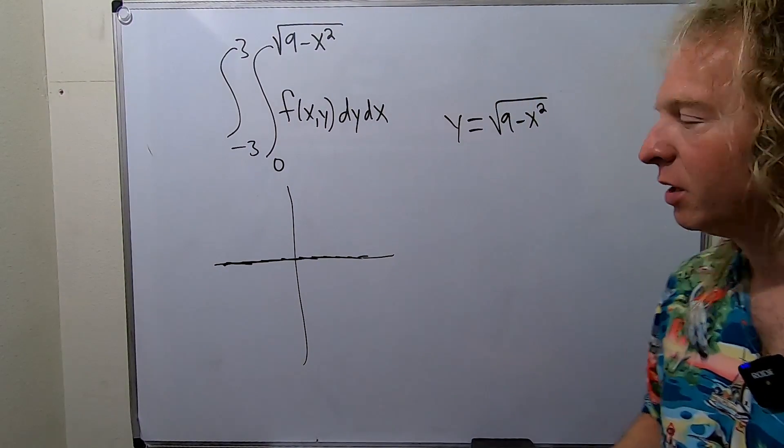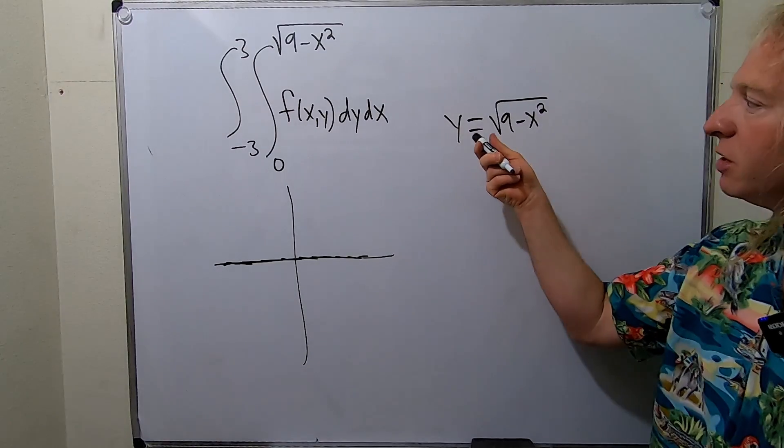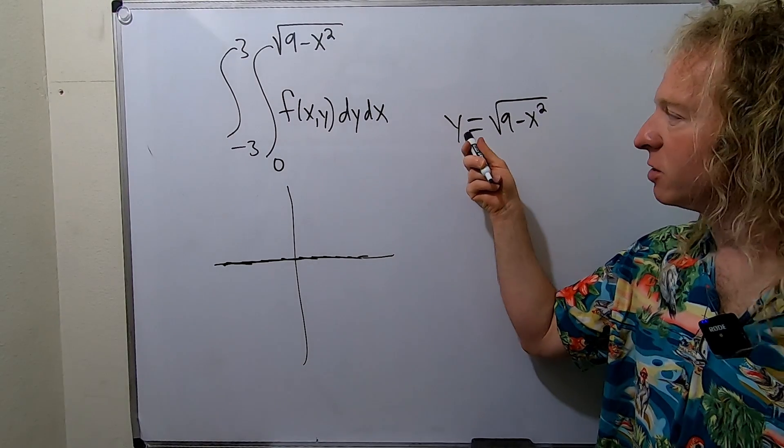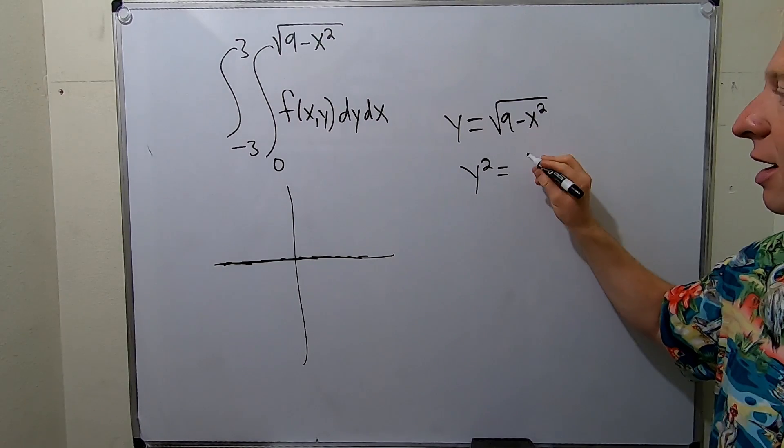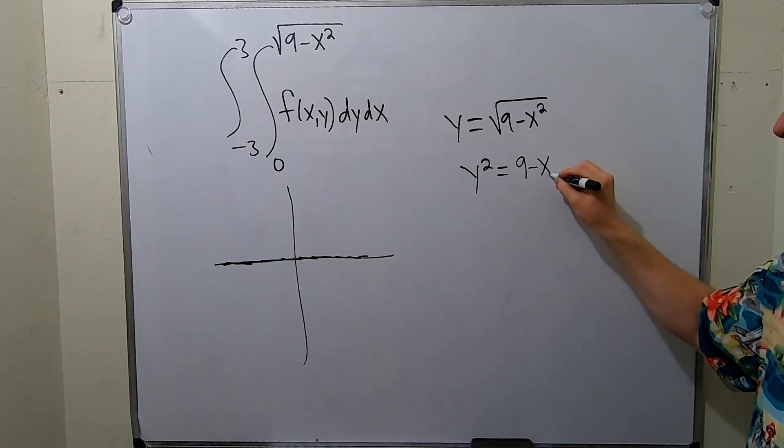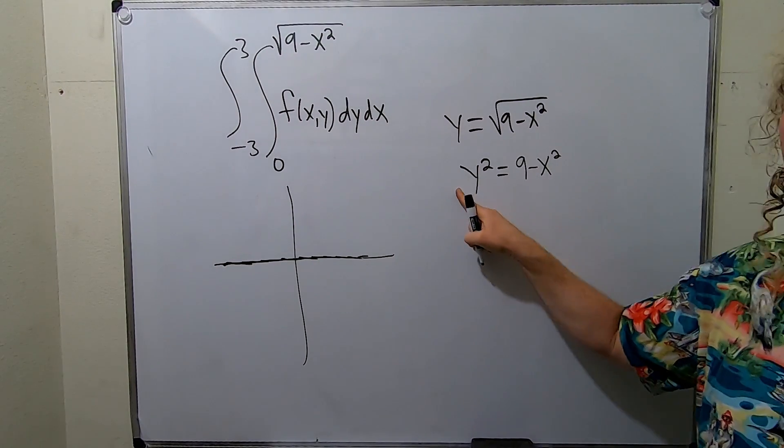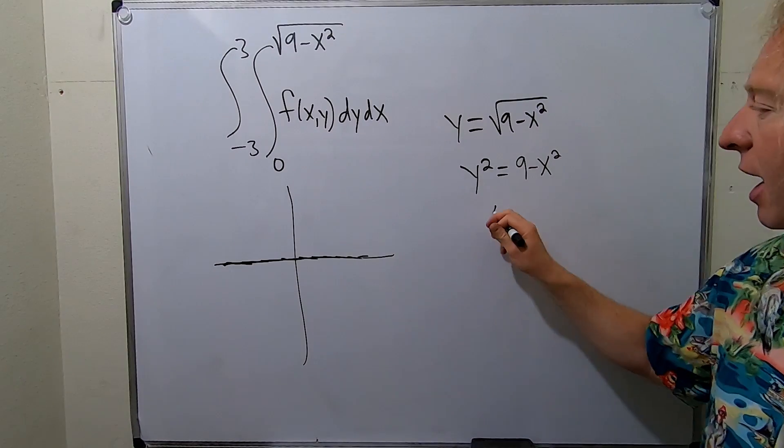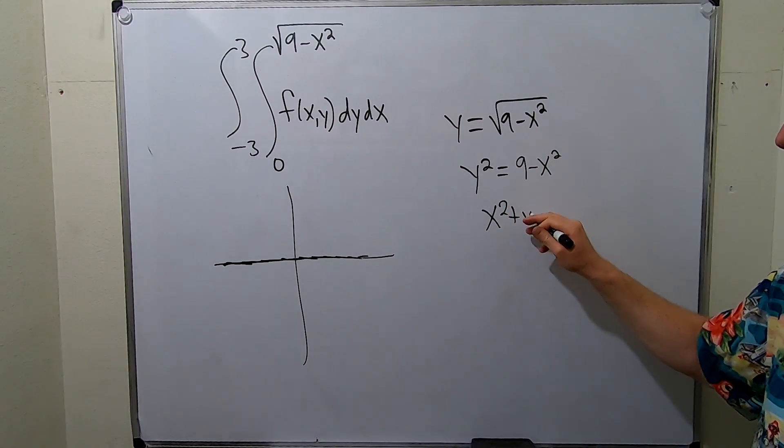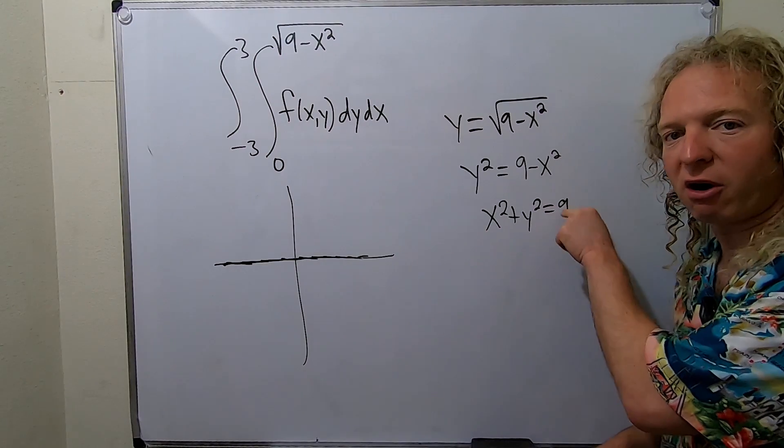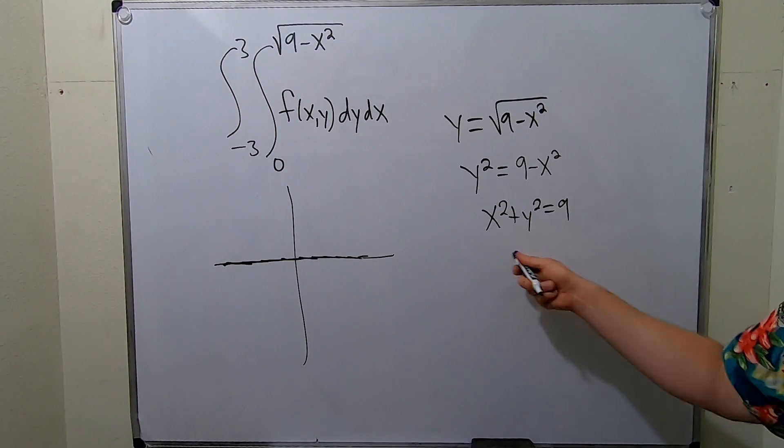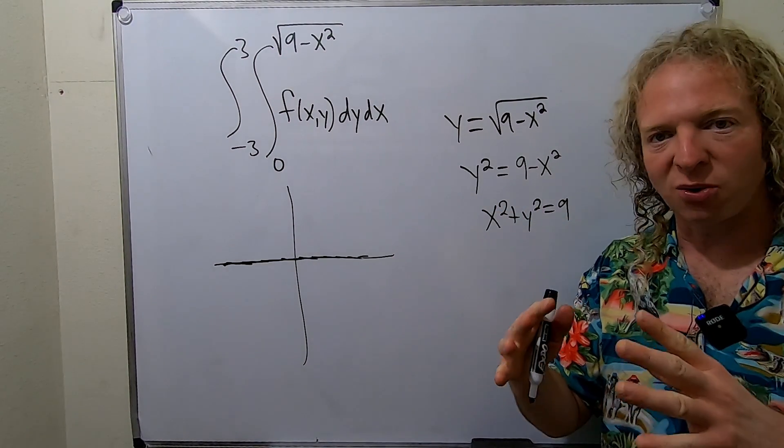That's the top half of a circle. If you don't know that, you can square both sides. If I square this side I get y squared, and if I square this I get 9 minus x squared. Then you can add x squared to both sides and you get a beautiful circle of radius 3. Remember, this is r squared. r is the square root of 9.